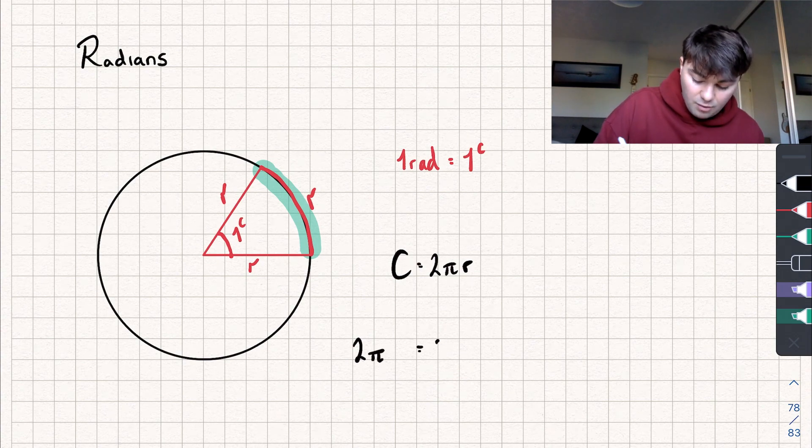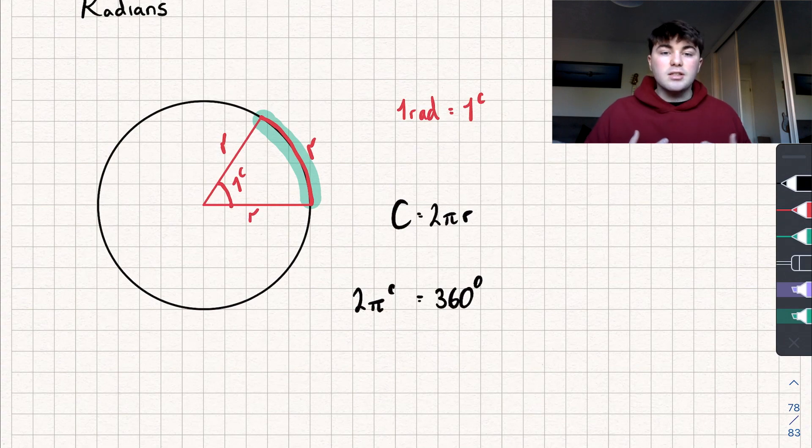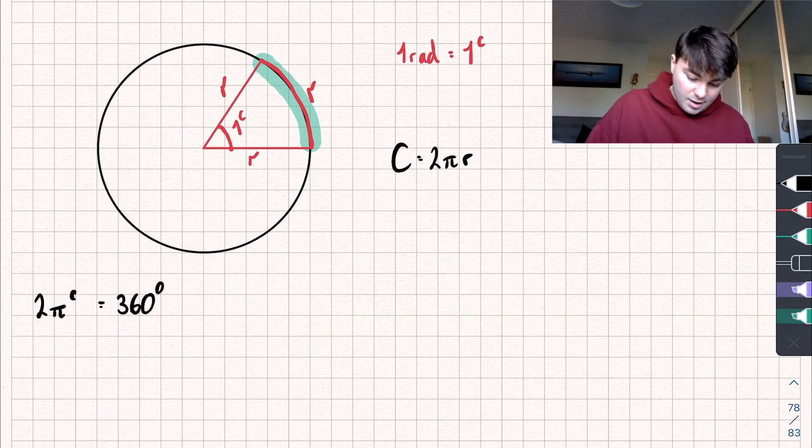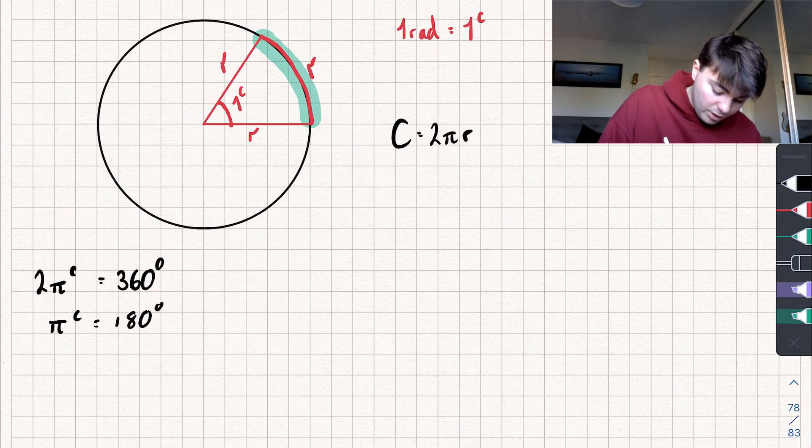So we could say 2π radians is equal to 360 degrees. Now we know that 2π radians is 360 degrees, how can we use this to help us convert from radians to degrees and degrees to radians? It's actually pretty easy. I'm going to keep this equality here, and I'm going to first divide both sides by 2 and we get that π radians is 180 degrees.